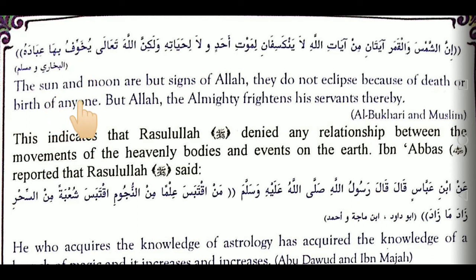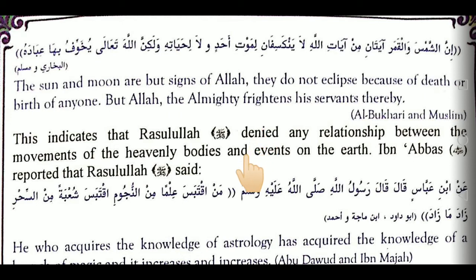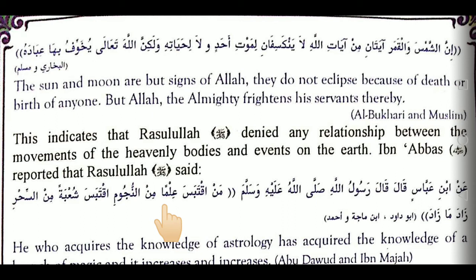When the Prophet (PBUH) came to know people were saying such things, he called them for salah. After salah he told them: 'The sun and the moon are but signs of Allah. They do not eclipse because of the death or birth of anyone, but Allah the Almighty frightens His servants thereby.' These are only the signs of Allah, shown to make people fear and know Him, and to strengthen belief in Allah Almighty alone.